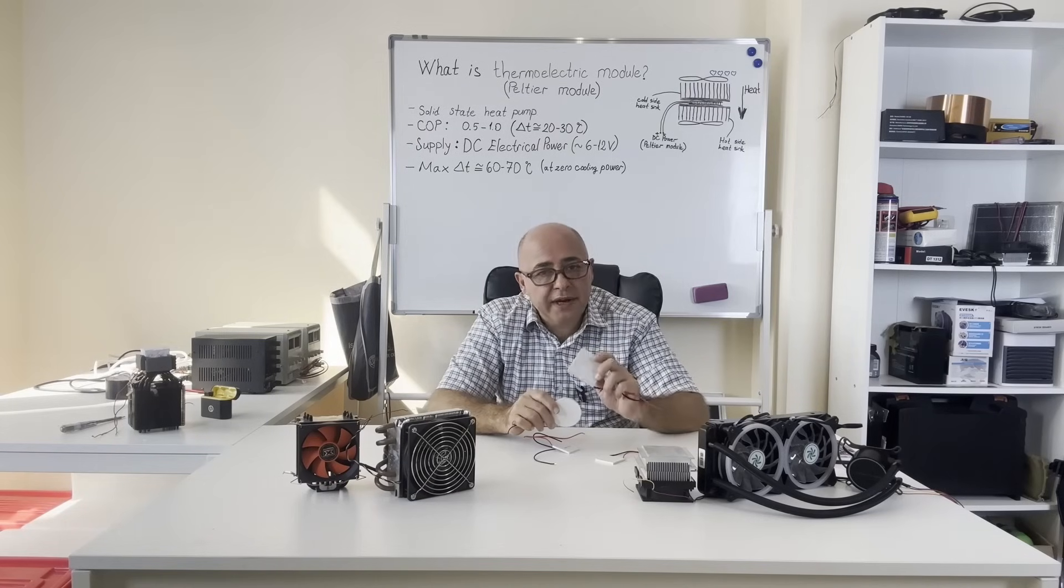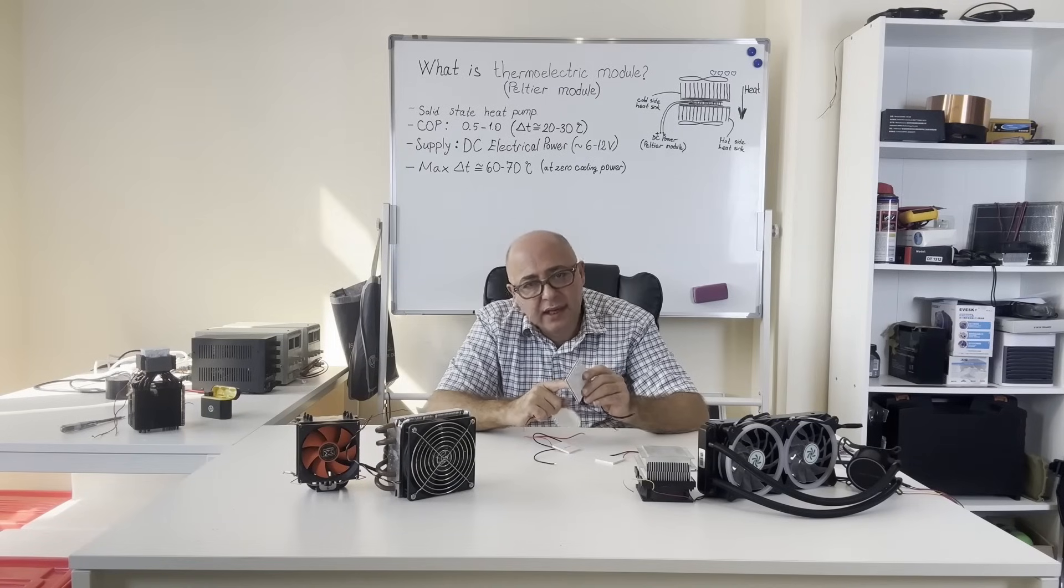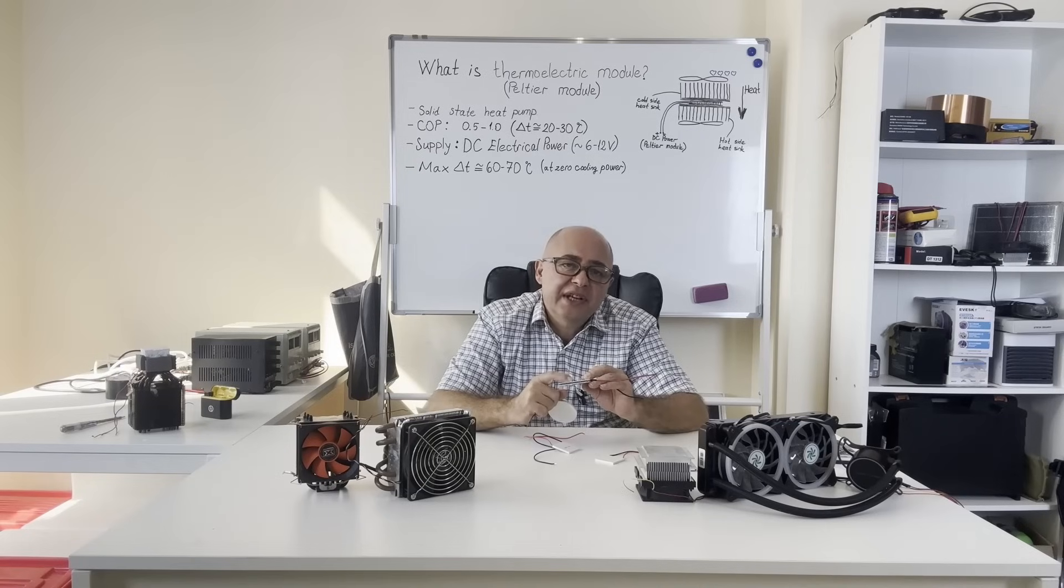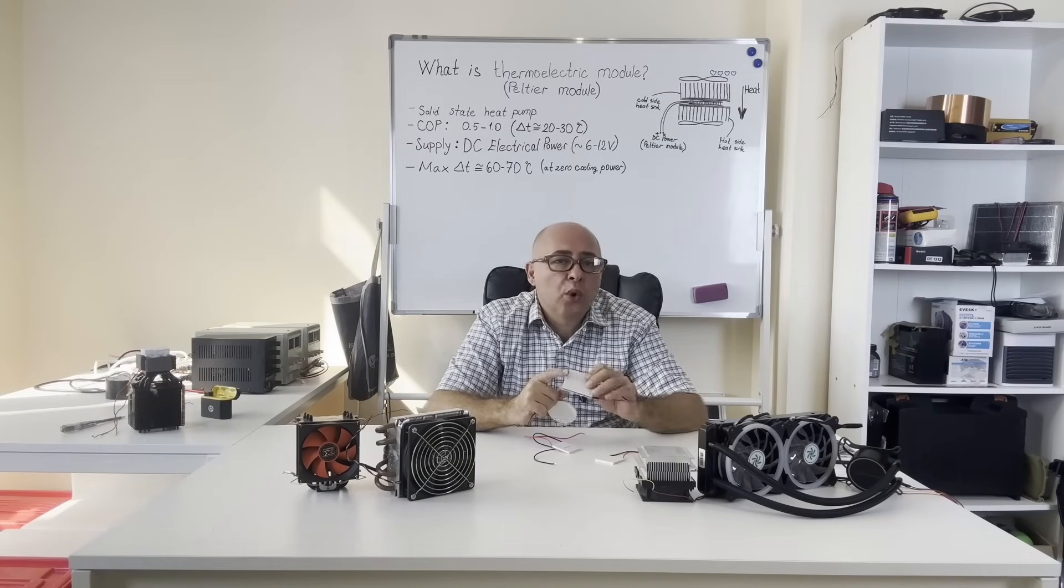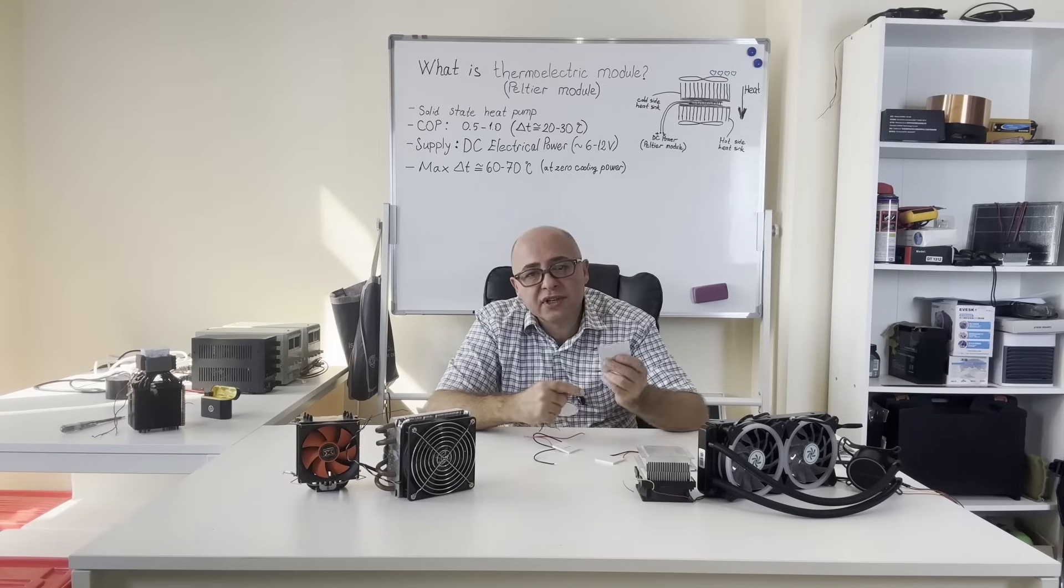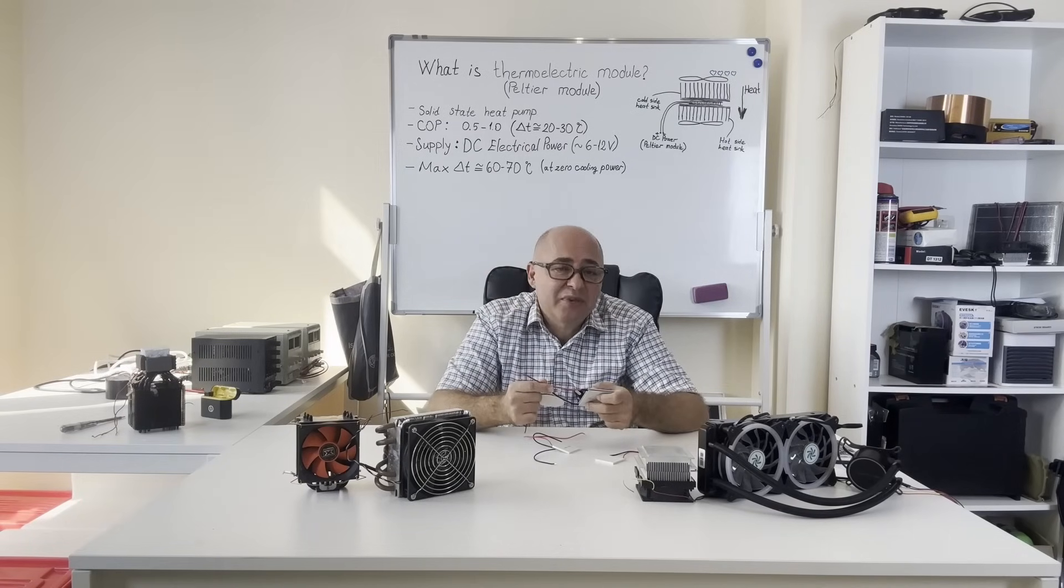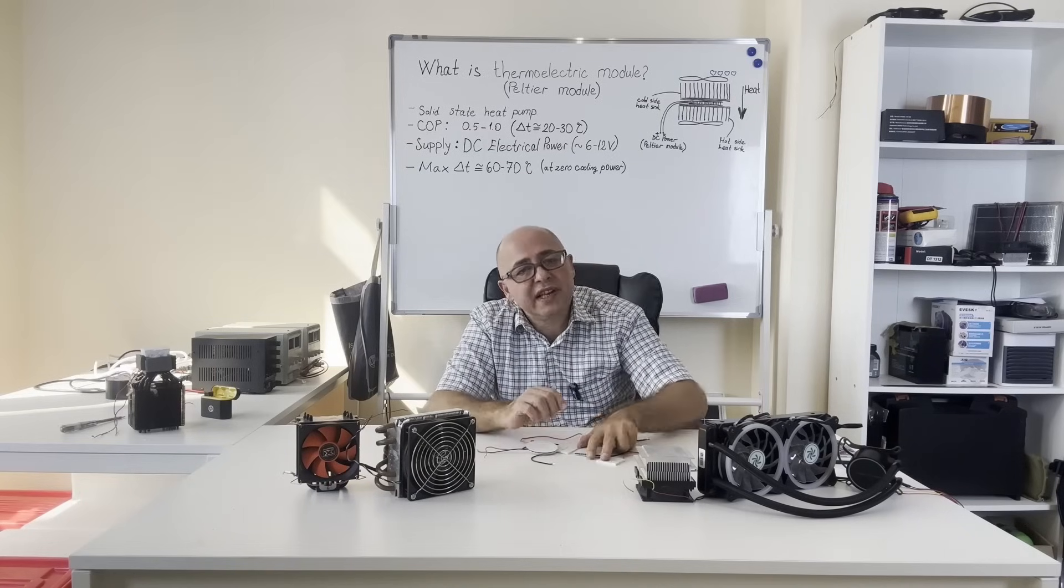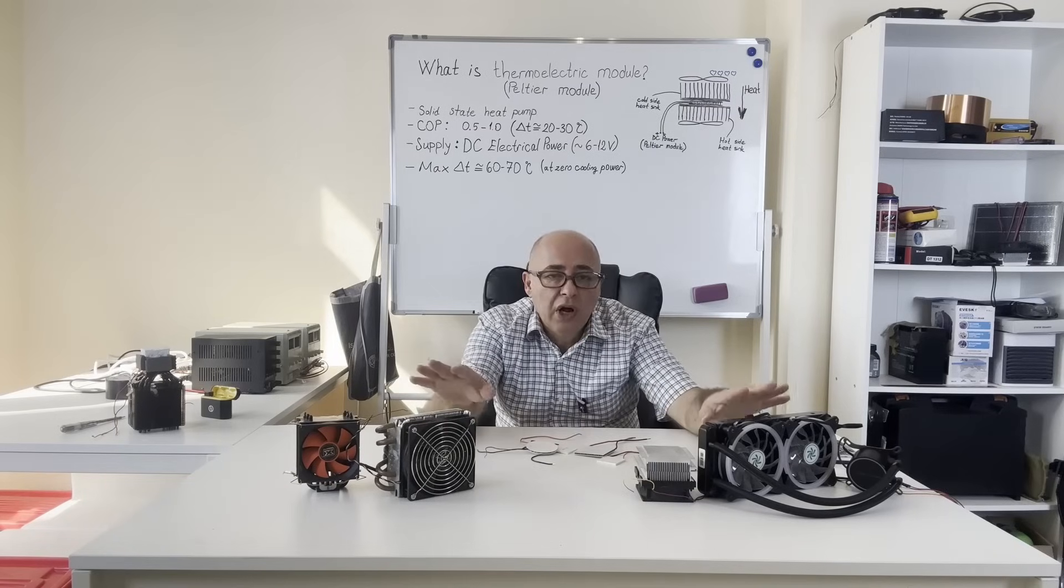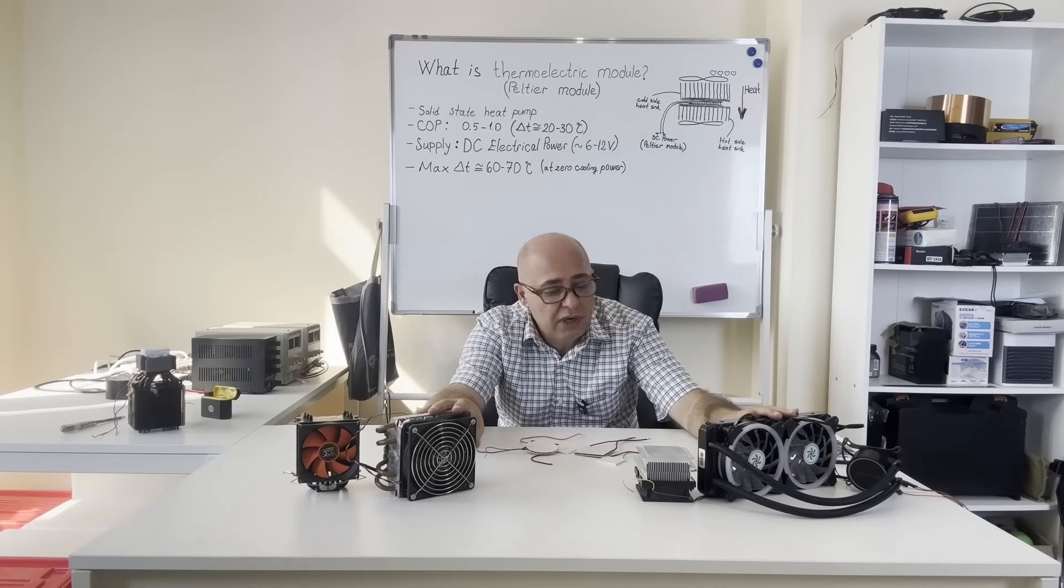Peltier modules can operate one surface as the heat absorbing side and other surface as the heat dissipation side. We can change hot and cold sides by changing the polarization of the DC voltage we apply. In fact, this is another advantage of Peltier modules. However, Peltier modules should be used with heat sinks for absorbing the heat and dissipation the heat from the other side.